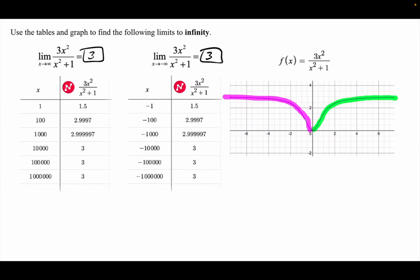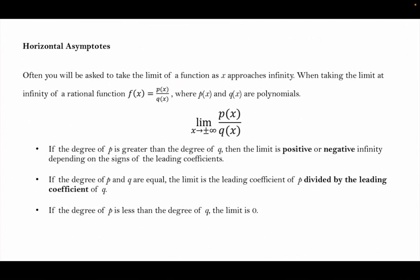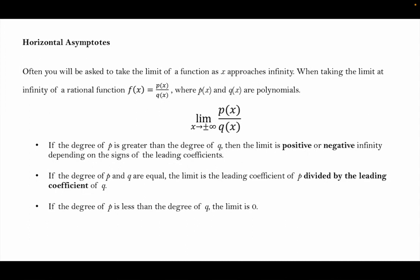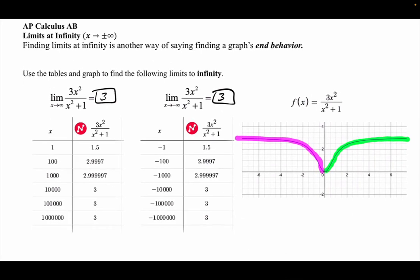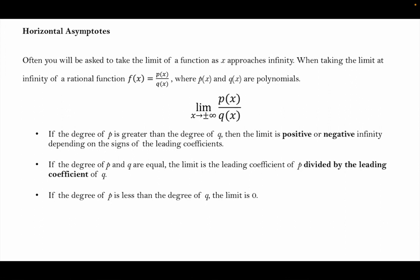I put tables and graphs up first because I wanted to give you the idea of what we're doing. So in words: often you will be asked to take the limit of a function as x approaches positive infinity or negative infinity. When taking the limit to infinity of a rational function — a rational function means it's a fraction with something on top and something on bottom — P(x) and Q(x) are polynomials, meaning they have whole number powers. Sometimes plain English doesn't sound like plain English, so we'll do it on the back side to make it simpler.